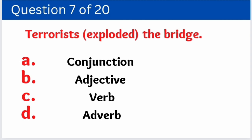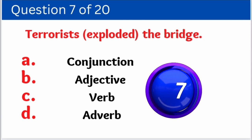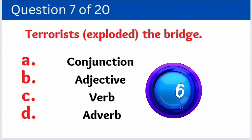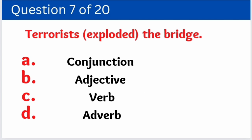Question number seven: 'Terrorists exploded the bridge.' Here we have to identify how the word 'exploded' is used. Options are: A. Conjunction, B. Adjective, C. Verb, D. Adverb. And the right answer is option C — the word 'exploded' is used here as a verb.